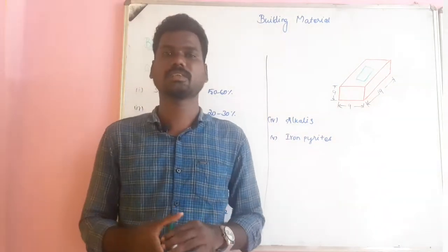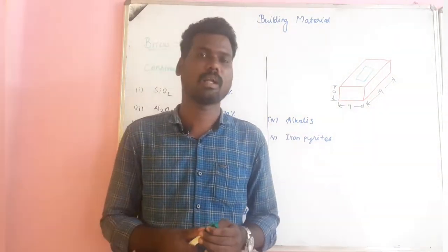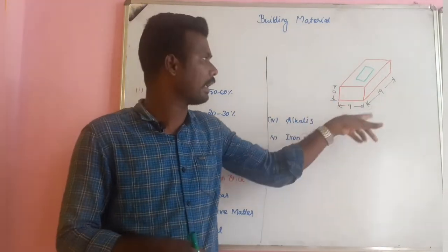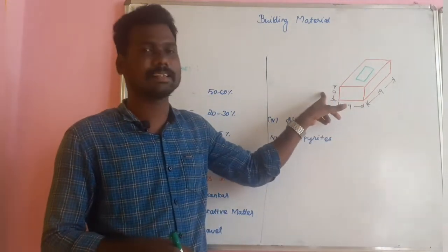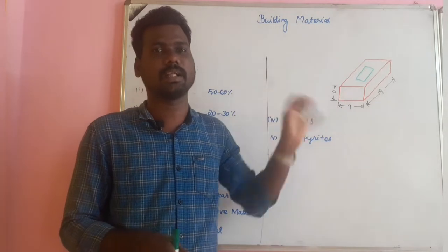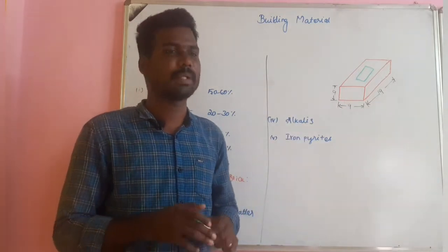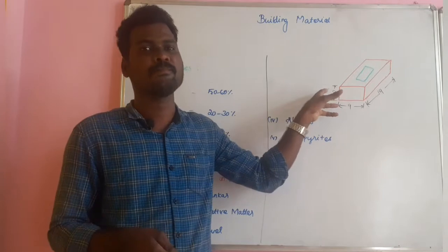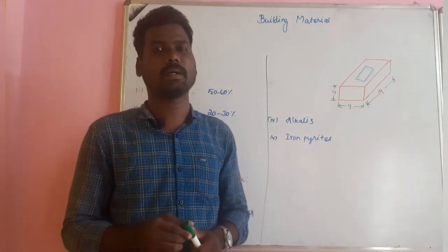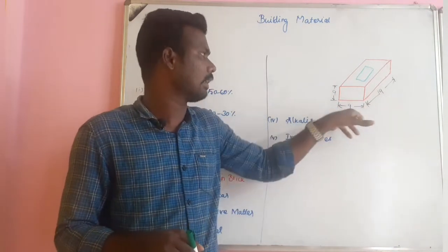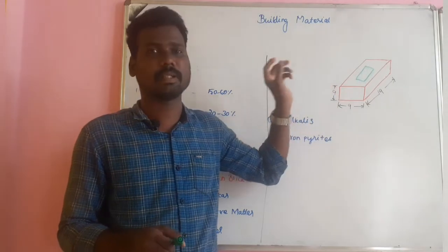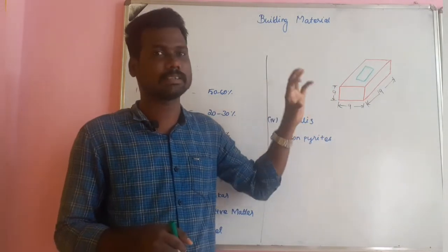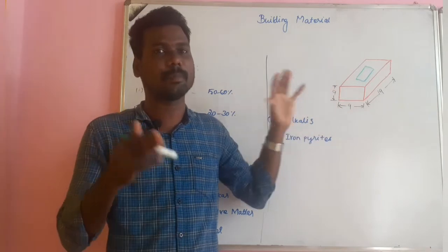We should know key facts about brick. The standard size of a brick is 19cm × 9cm × 9cm. The nominal size of a brick is 20cm × 10cm × 10cm. The difference is because we consider the mortar joint thickness for the nominal size.